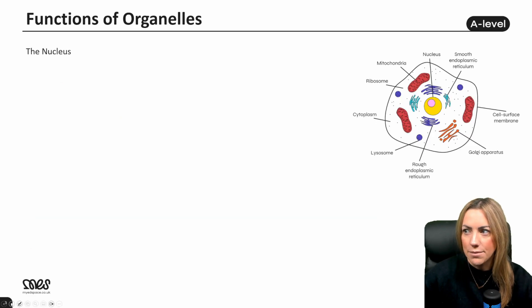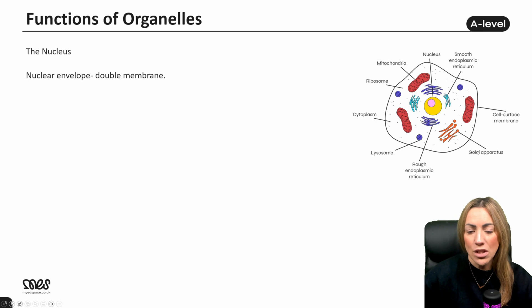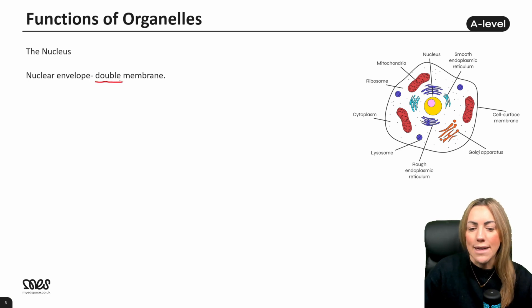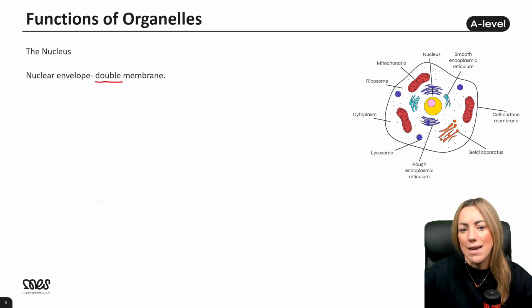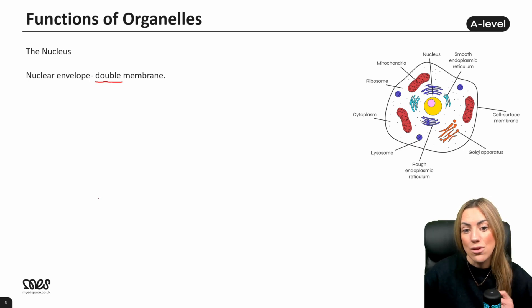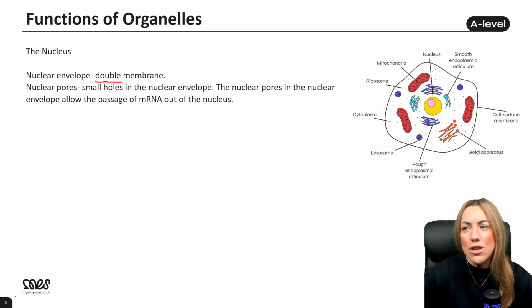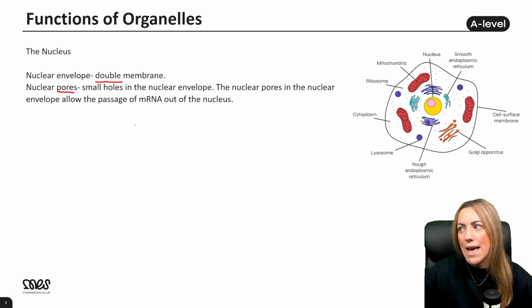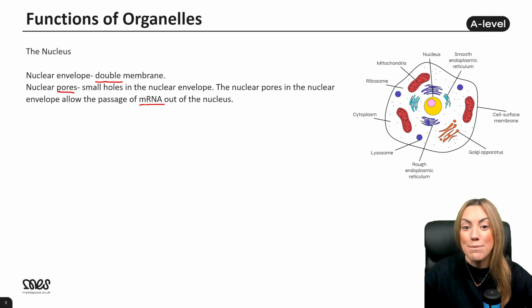Let's go through each one of these. Starting with the nucleus — it's got a nuclear envelope, or nuclear membrane. It is a double membrane, so there are actually two phospholipid bilayers, the same as the mitochondria and chloroplasts in plant cells. In the nuclear envelope, there are nuclear pores, which are small holes that allow the passage of messenger RNA out of the nucleus.